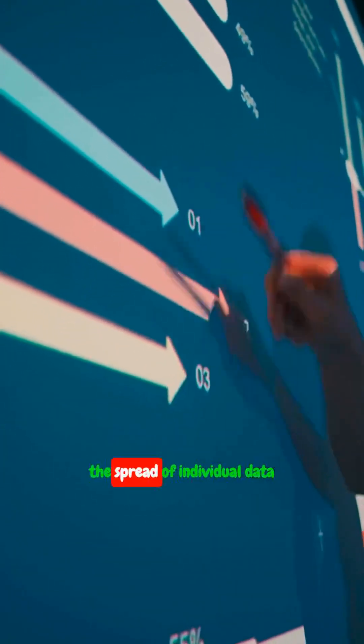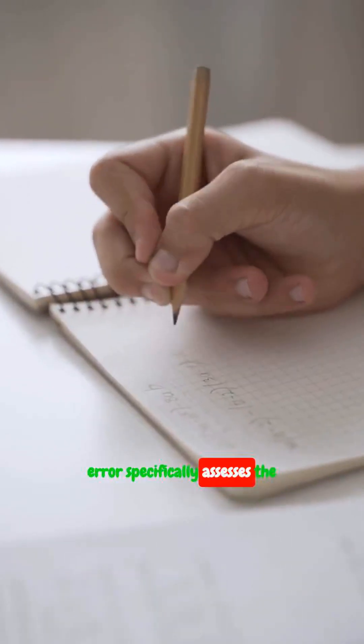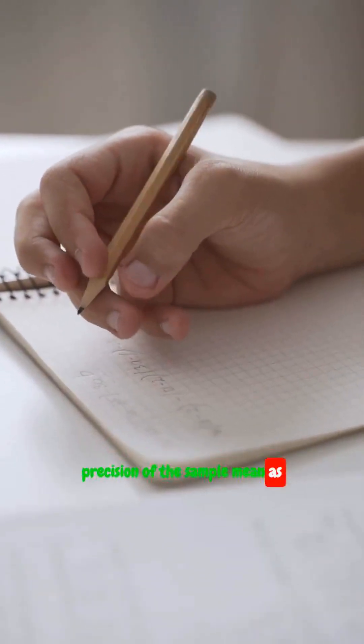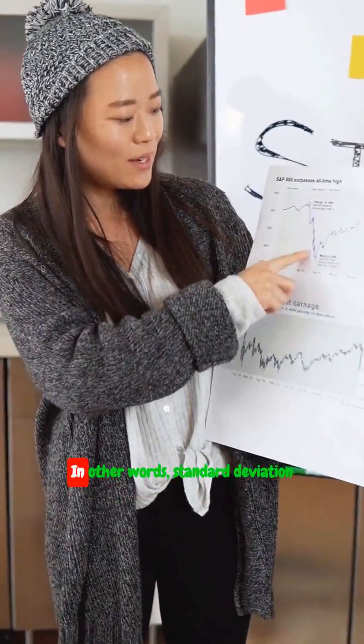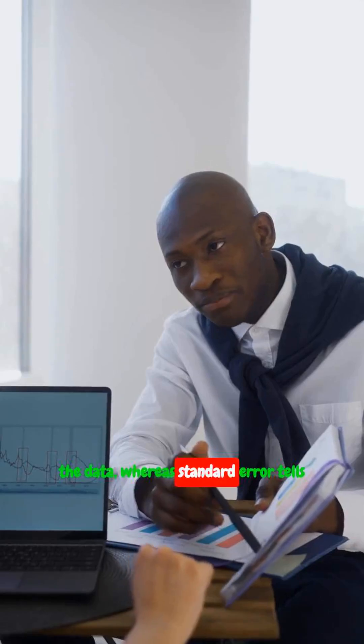While standard deviation measures the spread of individual data points within a sample, standard error specifically assesses the precision of the sample mean as an estimate of the population mean. In other words, standard deviation tells us about variability within the data, whereas standard error tells us about the reliability of the mean.